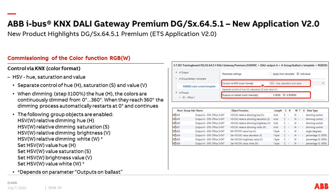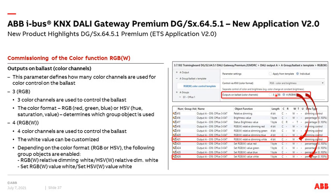If you prefer the HSV color format (hue, saturation, value), you get group objects for relative dimming of saturation, brightness, and white, and for setting values: the hue uses a KNX data point type 'angle' between 0 and 360 degrees, while saturation and brightness are between 0 and 100%. With the next parameter — 'outputs ballast with white or not white' — if you select 'with white' (RGBW, four colors), you additionally get objects for dimming white and setting the white value.